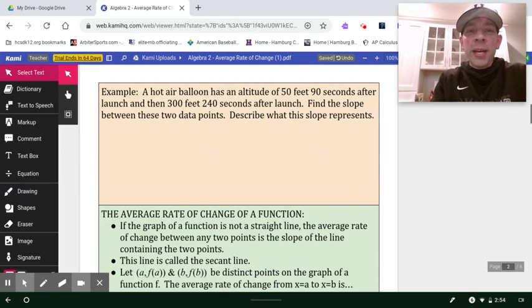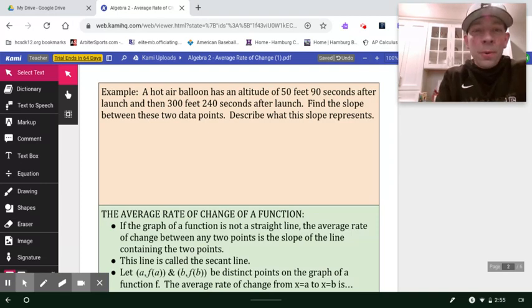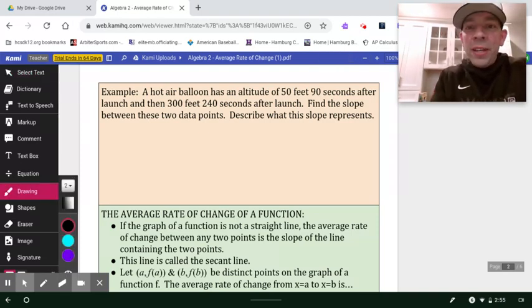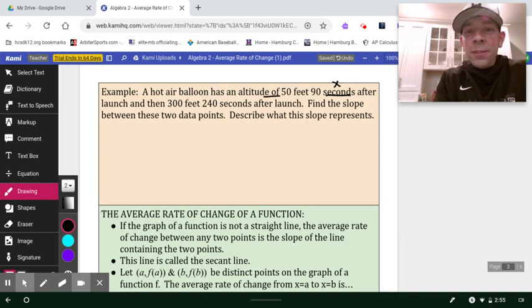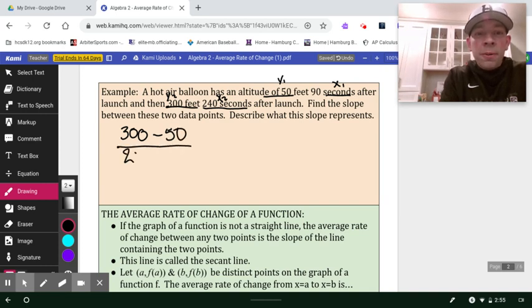Okay, so our first example is we've got a hot air balloon and we've been tracking the altitude from the moment that it was first launched and left the ground. And so it's very common and traditional that your time frame is going to be your independent variable. So if I go to set this up and find the slope, I'm thinking 300 minus 50 all over 240 minus 90. That's going to make 250 over 150. We'll reduce that. That looks like maybe five-thirds.